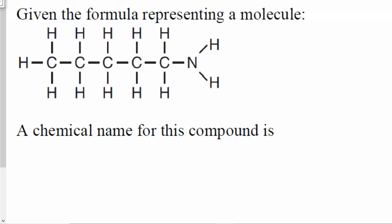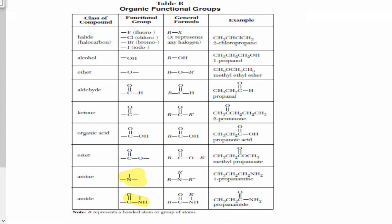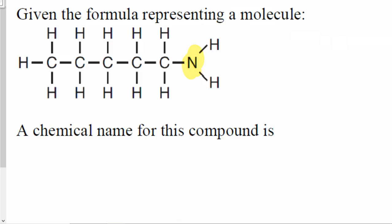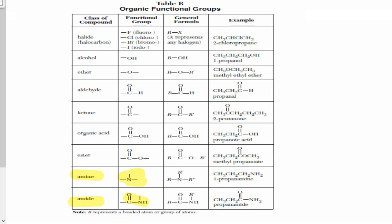We have to name this next compound. In this compound, not only do you have carbon and hydrogen, you also have nitrogen. It's always a good idea to highlight the part that is not just carbon and hydrogen. So I know my functional group has nitrogen in it, and I go to reference table R to identify which functional group has nitrogen. You can see that two functional groups have nitrogen: amine or amide. For amide, you not only have nitrogen — you also have carbon double bonded with oxygen. I do not see that here, so I will go with amine.